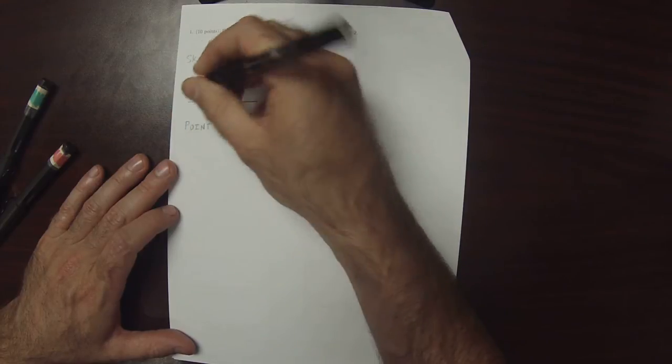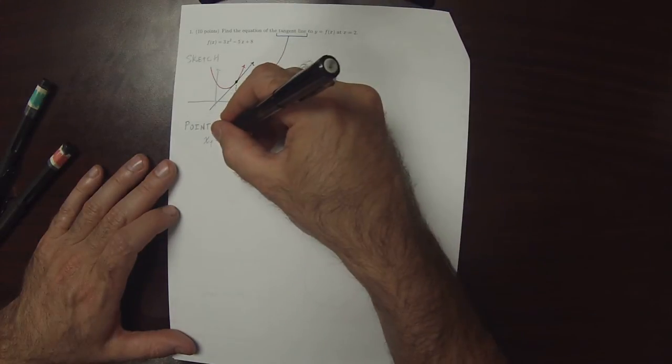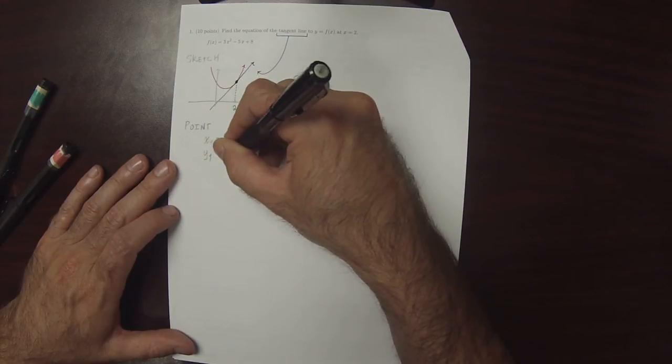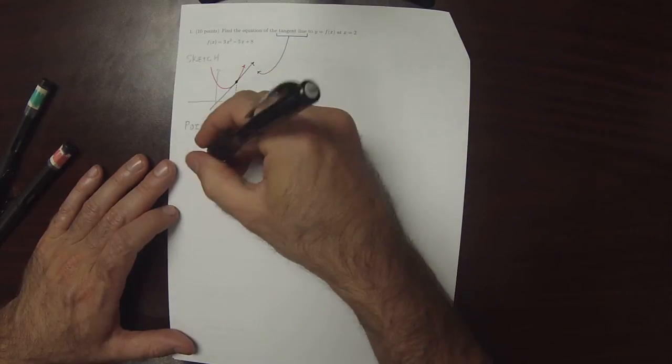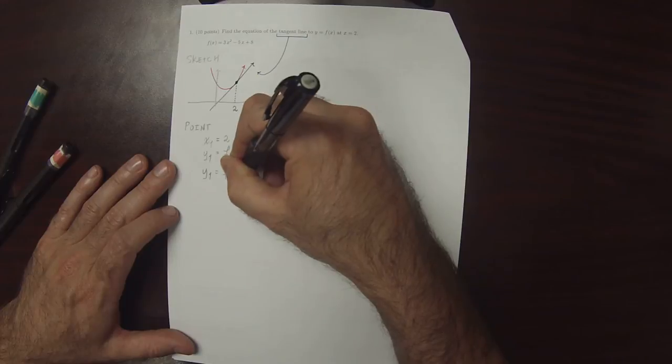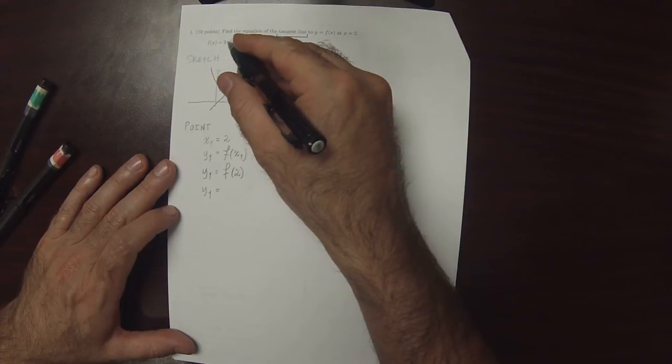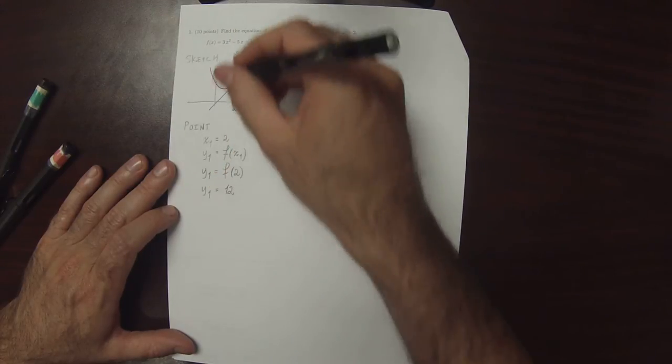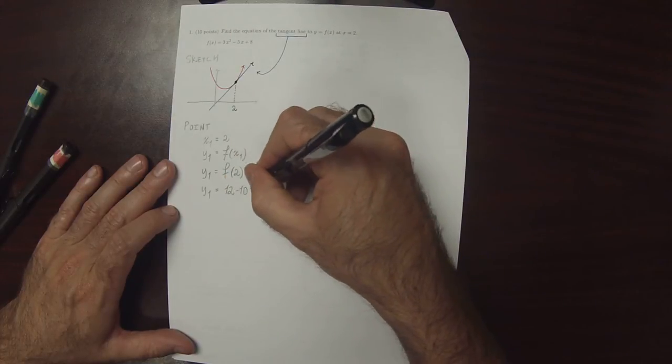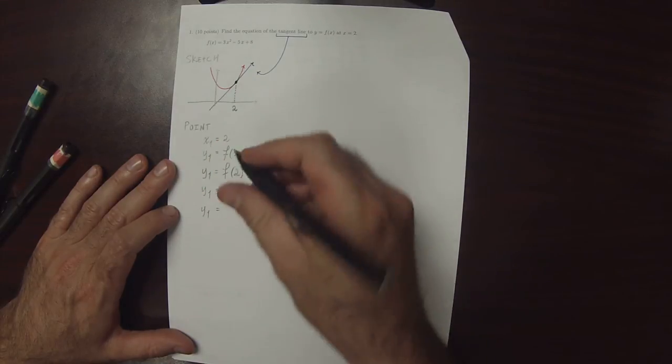To find the point, x1 is given as 2. y1 is the function f evaluated at x1, which is to say that y1 is f evaluated at 2. So, if we plug in 2, that would be 3 times 4 is 12, minus 5 times 2 is 10, plus 8. So, y1 is 10.